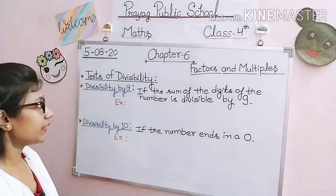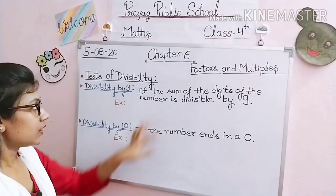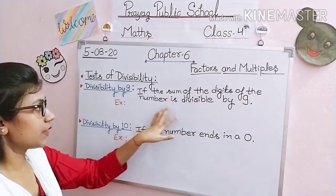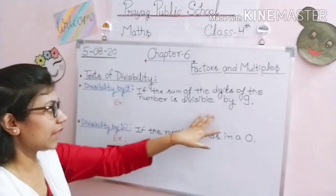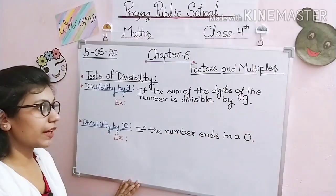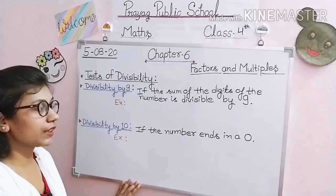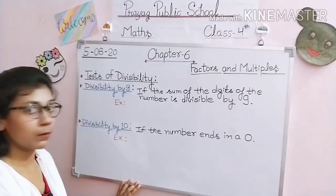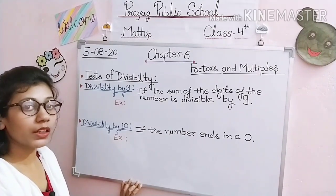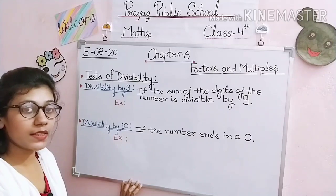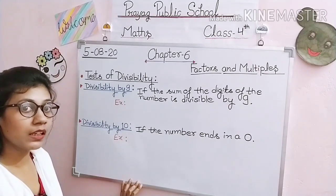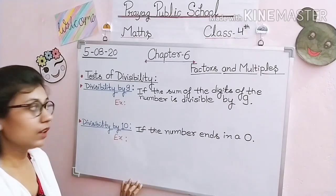Next topic is divisibility by 9. If the sum of the digits of the number is divisible by 9, then the given number is divisible by 9. If any given number's digit sum is divisible by 9, only then that given number will be divisible by 9; otherwise the number will not be divisible by 9.